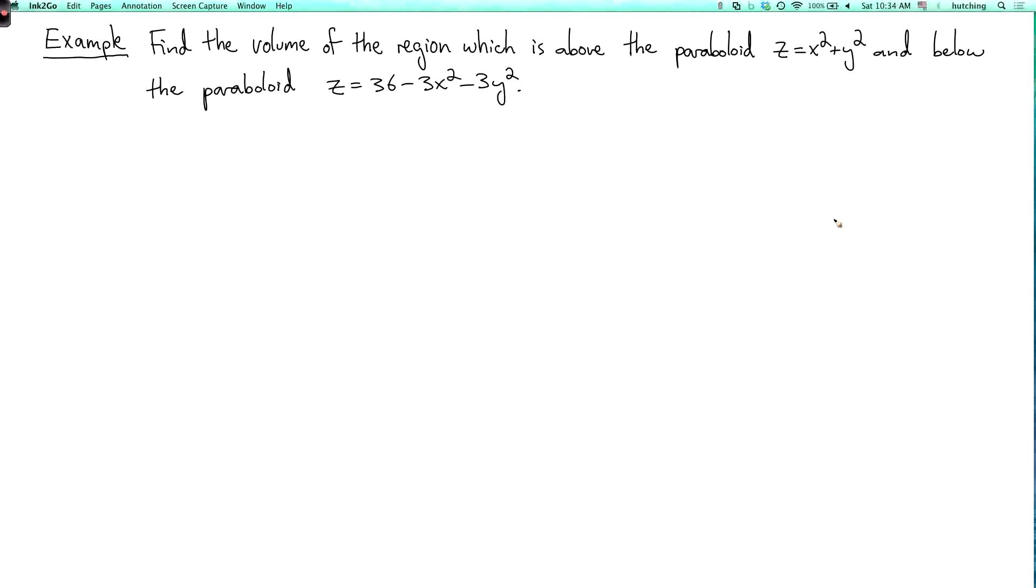So let's draw a sketch of this region. The first paraboloid is a right-side-up paraboloid like this, z equals x squared plus y squared.